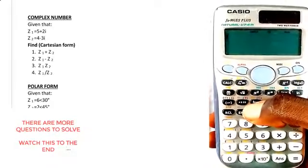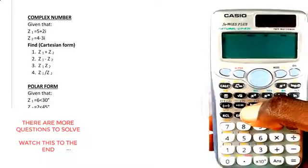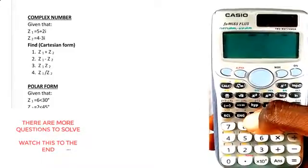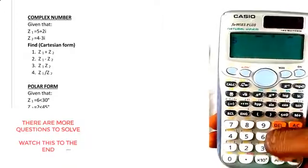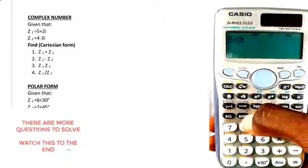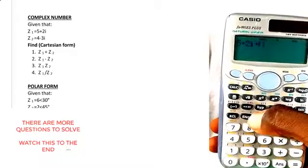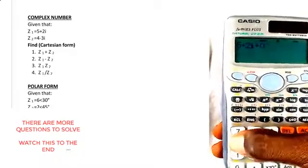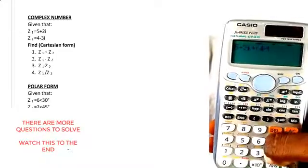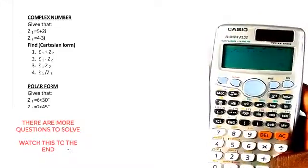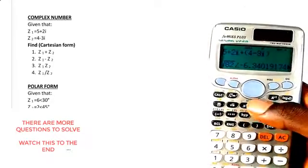Now I want to find the sum. We have 5 + 2i, and this is your i, plus open brackets 4 - 3i close brackets, and then equals. That's the answer you have in polar form—the answer is displayed in polar form.